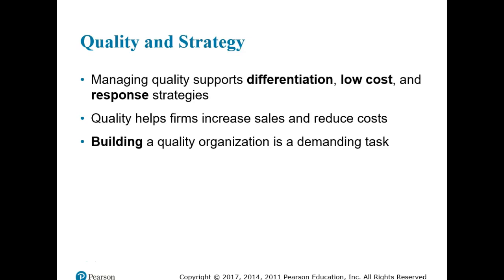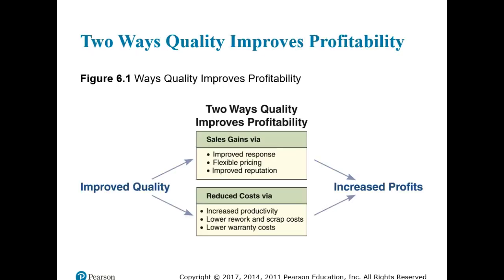High quality is not an exclusive strategy unto itself. The pursuit of high quality can actually support other strategies discussed in Chapter 2 by satisfying customer needs or making things run more smoothly or cheaply. It is possible to have high quality and low cost at the same time. A successful quality management system must have top management support and involves much more than implementing a tool or memorizing a list of concepts or Deming's 14 points.